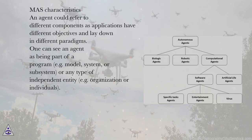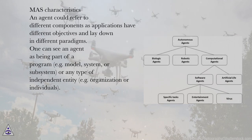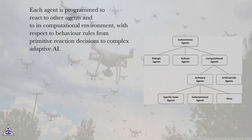An agent could refer to different components as applications have different objectives and lay down in different paradigms. One can see an agent as being part of a program, for example a model, system, or subsystem, or any type of independent entity, for example an organization or individuals. Each agent is programmed to react to other agents in its computational environment, with respect to behavior rules from primitive reaction decisions to complex adaptive AI.